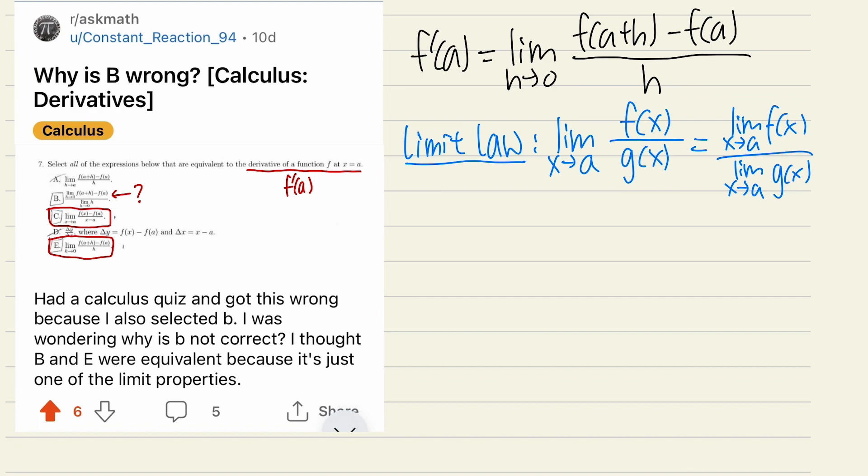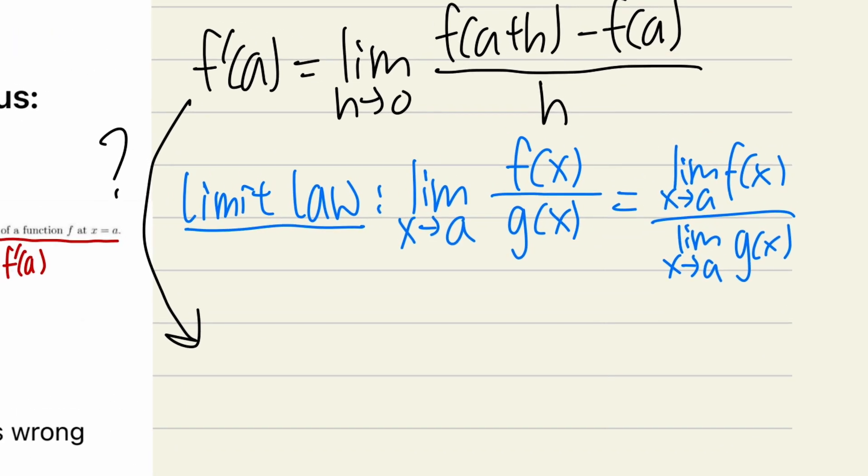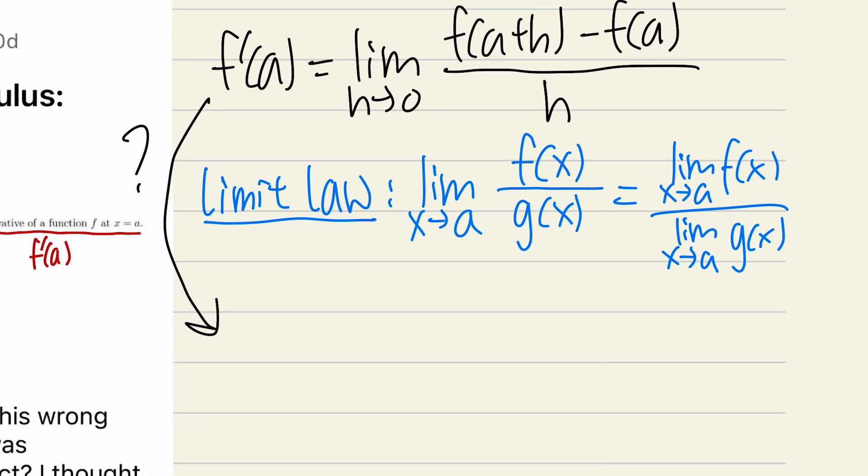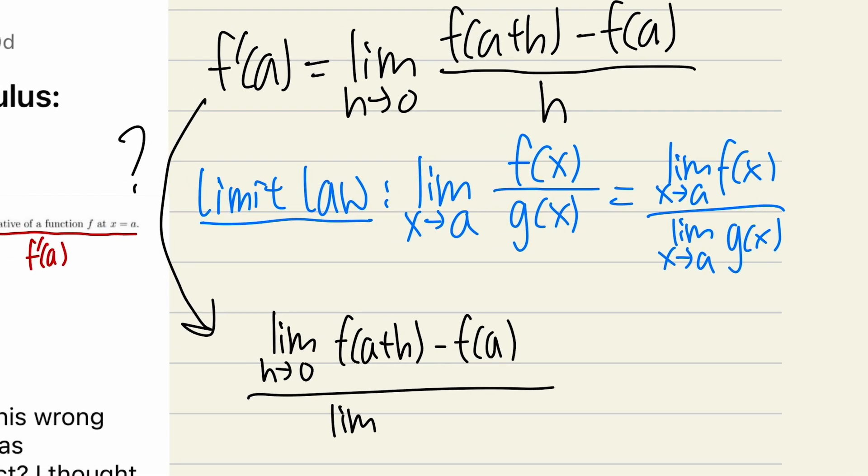In this case, how come we cannot just use the limit law right here, and that should give us the limit of the top and the limit of the bottom? Why isn't this the same as the limit as h approaching 0 of f of a plus h minus f of a over limit as h approaching 0 of h? How come this is false?